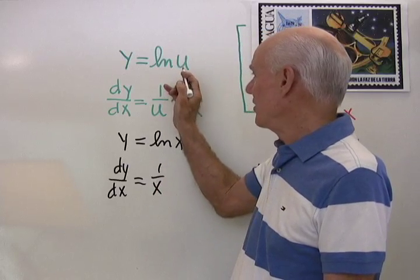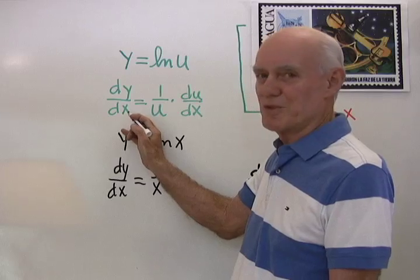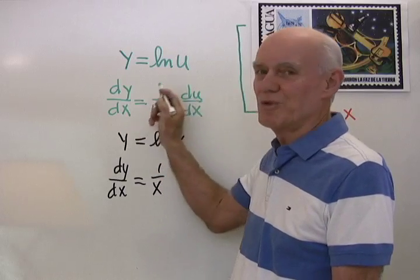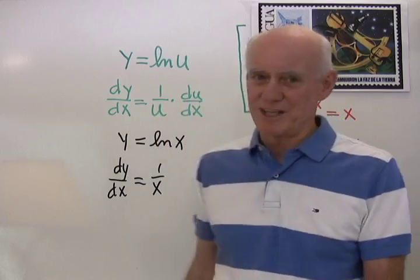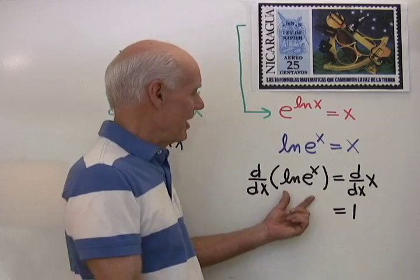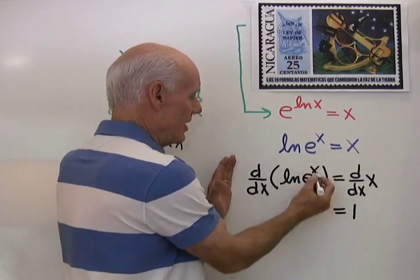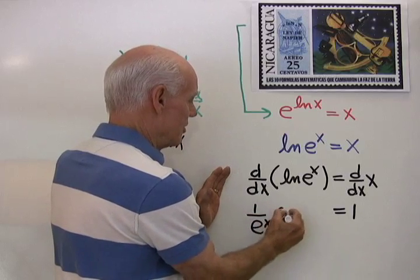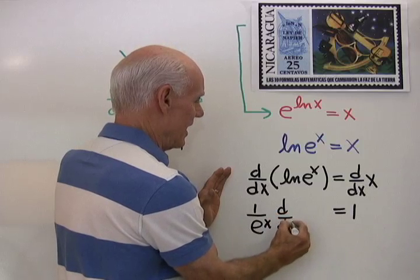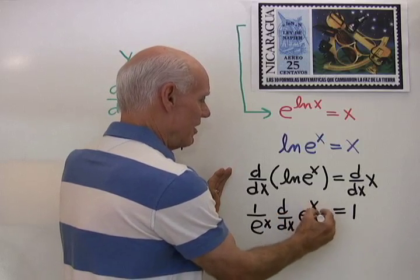But if this right here isn't x and I'm differentiating with respect to x, then it's the chain rule. Remember, 1 over u times the derivative of u with respect to x. So I'll apply that right here. What's the derivative of log u right here? Well it's 1 over u times the derivative with respect to x of u itself.